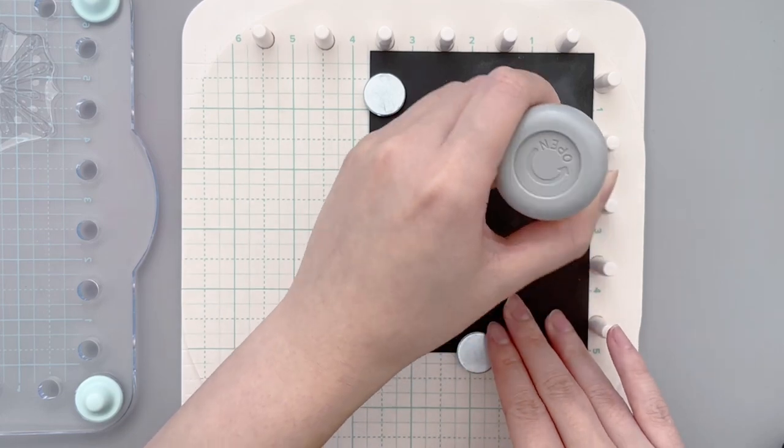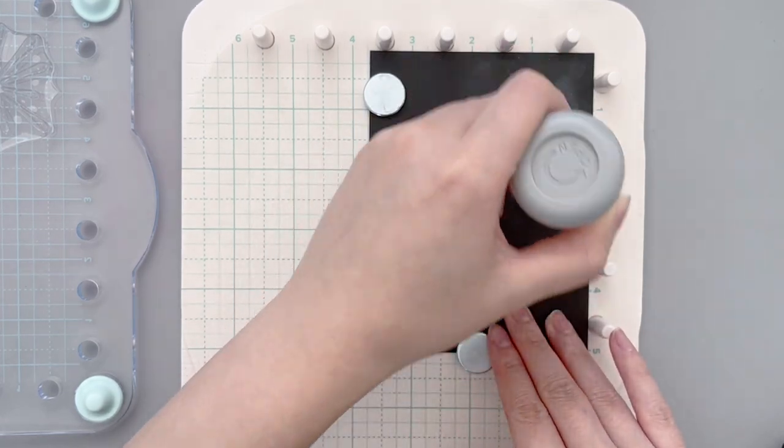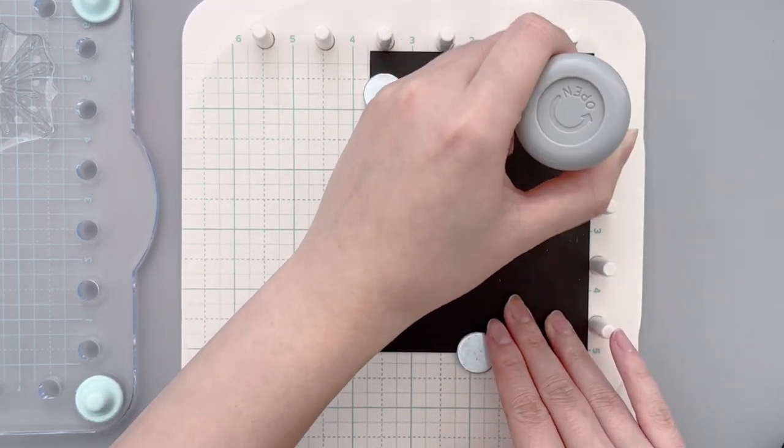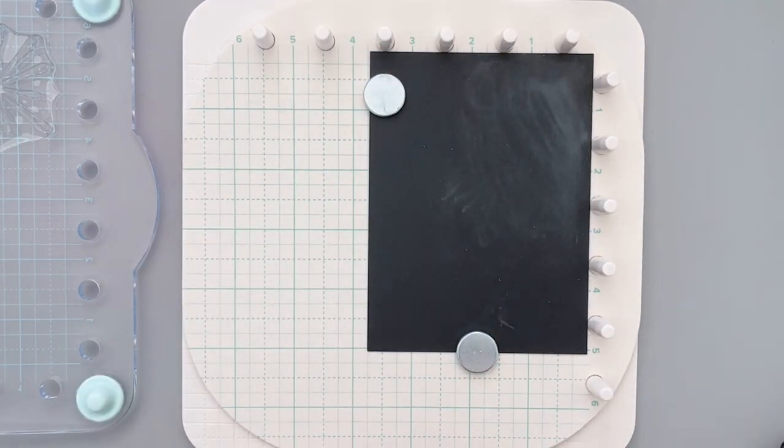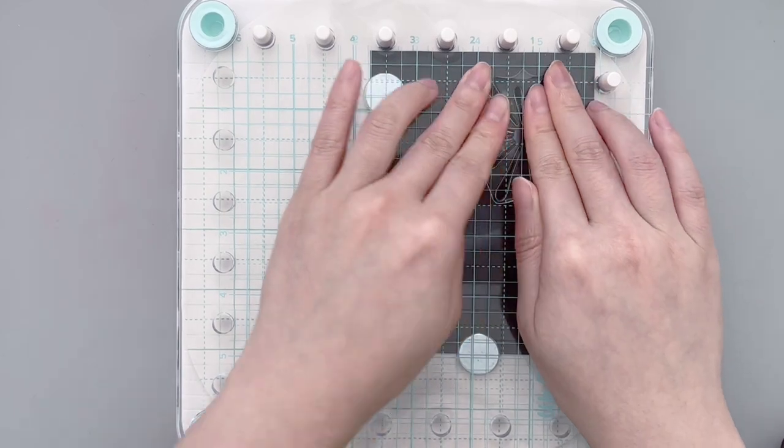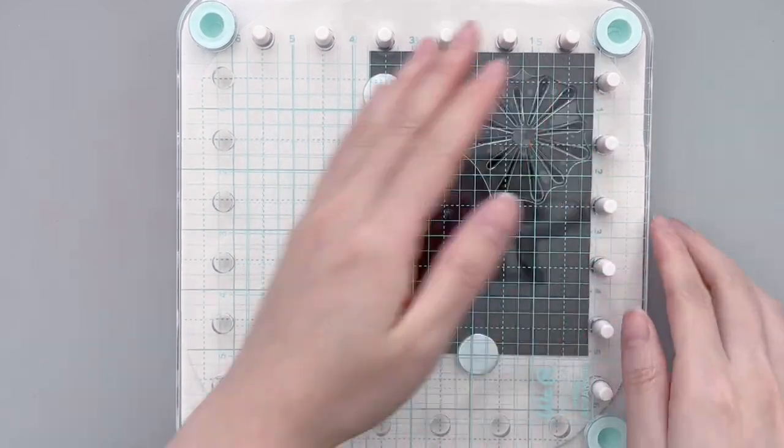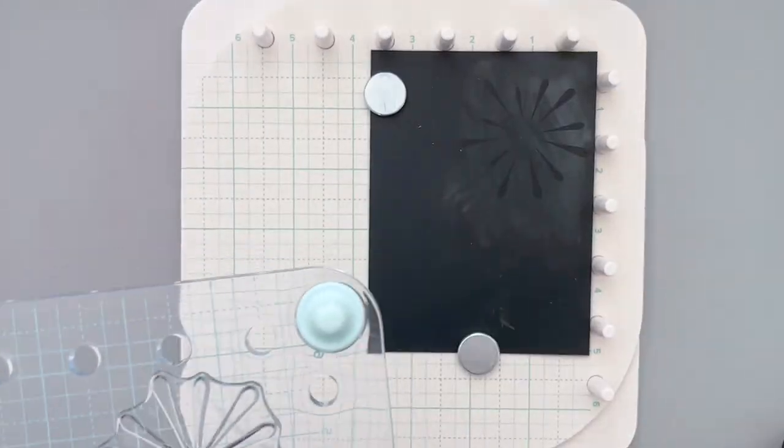Before I start with heat embossing, I always like to apply some anti-static powder tool to my cardstock. It really helps prevent excess powder from sticking to your cardstock. Then you can stamp the images with VersaMark ink pad and pour on the embossing powder.